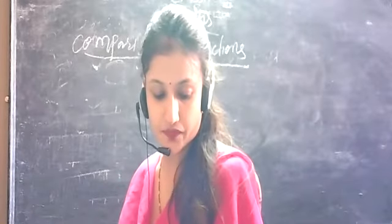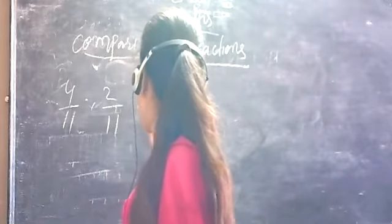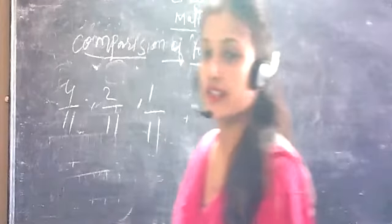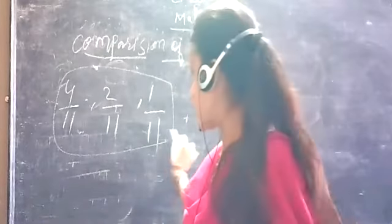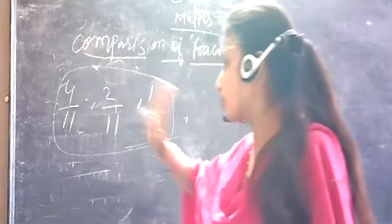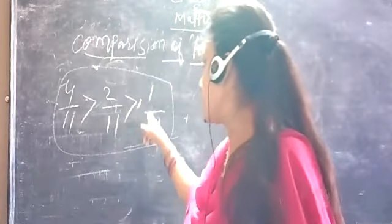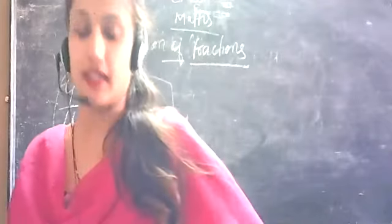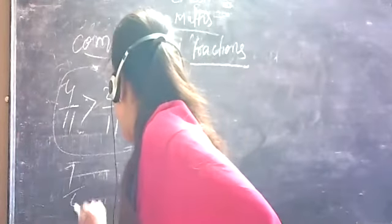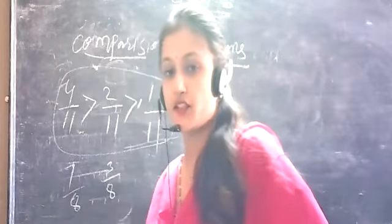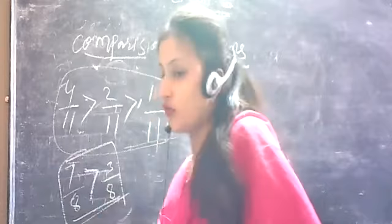Next, I have four upon eleven, two upon eleven, and one upon eleven. The denominator is the same for all three fractions. Since the numerator 4 is greater, four upon eleven is the greatest fraction. The rule applies: where the denominator is the same, the greater numerator means the greater fraction.